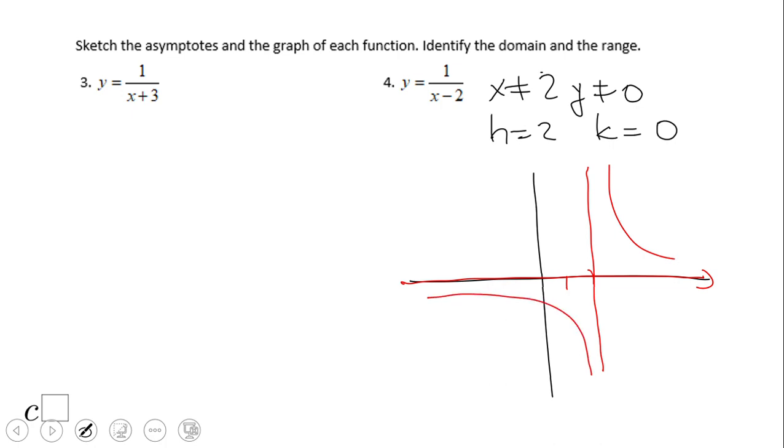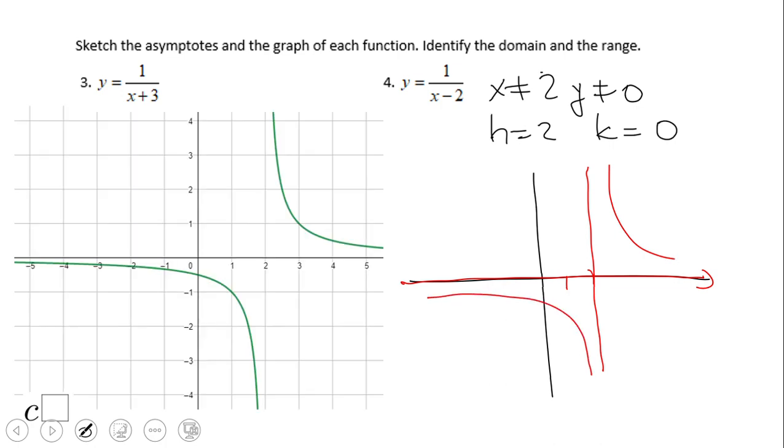If you have something like that, then you did a wonderful job. The domain is any real number but two, the range is any real number but zero, vertical asymptote h equals two, k equals zero. And you see the graphs now by hand and by a computer algebra system.